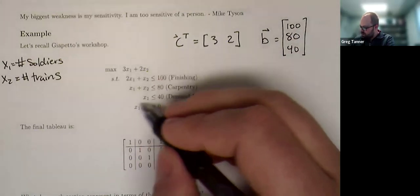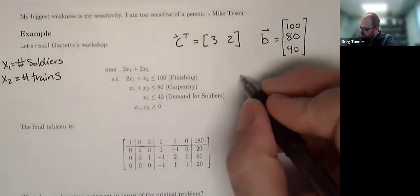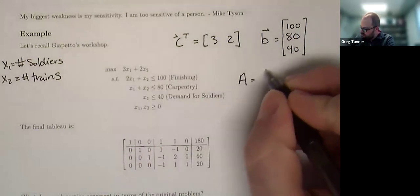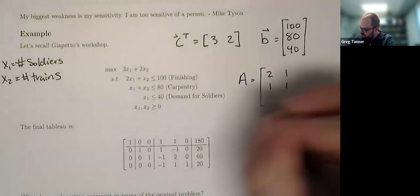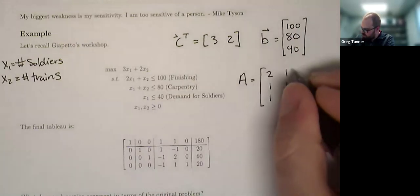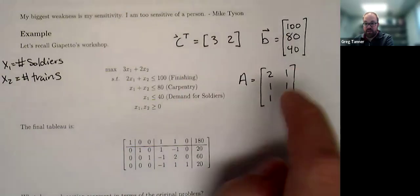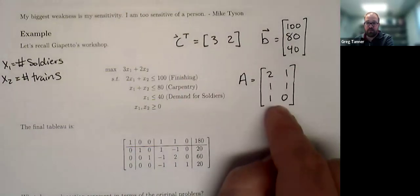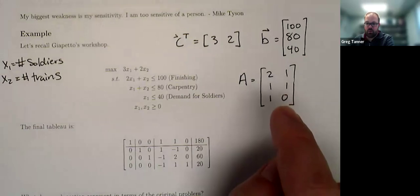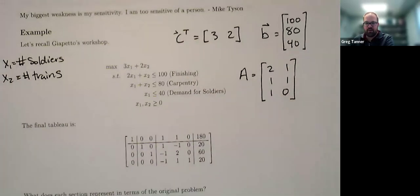And then we've got our constraint matrix, which has all the coefficients from over here. That's going to be our A matrix. That's 2, 1, 1, 1. Here's a 1 in front of X1, and there's no X2 there, so that's a 0 for the X2 variable. So these are essentially the inputs or the parameters of the problem. And the question is, in what way does our answer or our solution change if we were to mess with any one of these parameters?